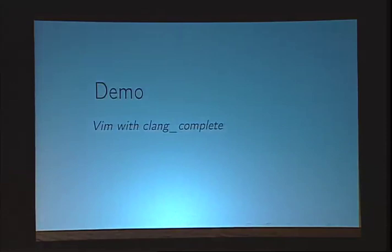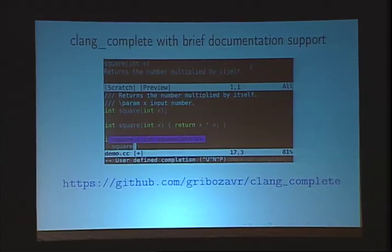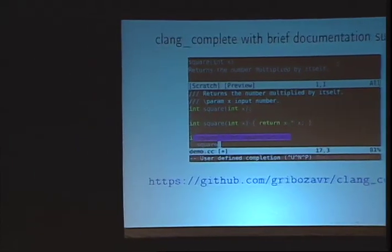This feature is currently implemented in my fork of ClangComplete. If you want to try it, you're free to download a copy of my repository. I'm currently working to get this merged back to the upstream ClangComplete repository. There are some issues regarding serialization of information between the Python backend that calls libclang APIs and the representation of information in Vim — we're trying to resolve that currently.